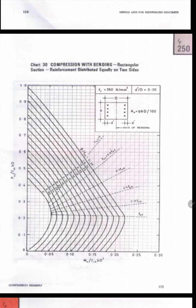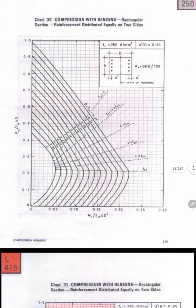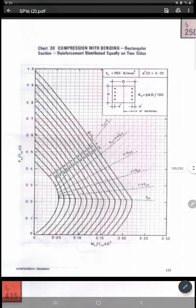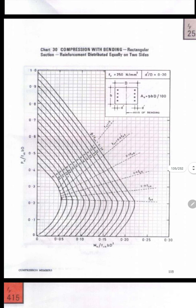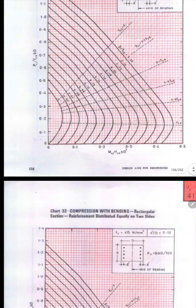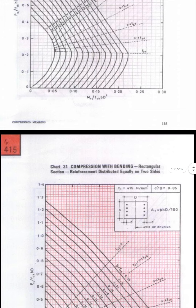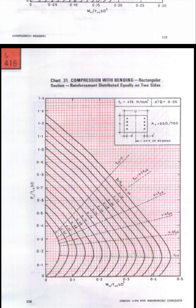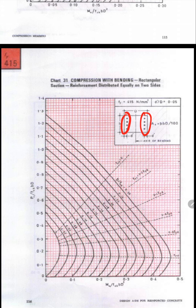Chart number 30 is for d'/d = 0.2. Like that, for different grades of steel and different d'/d ratios we will have different charts. Generally we will be using a minimum steel grade of Fe 415. You need to check d'/d — many times you will assume the value of d' and d will be given as the size of the column. You also need to check the reinforcement distribution — how exactly you are going to distribute it, either on two sides or four sides.